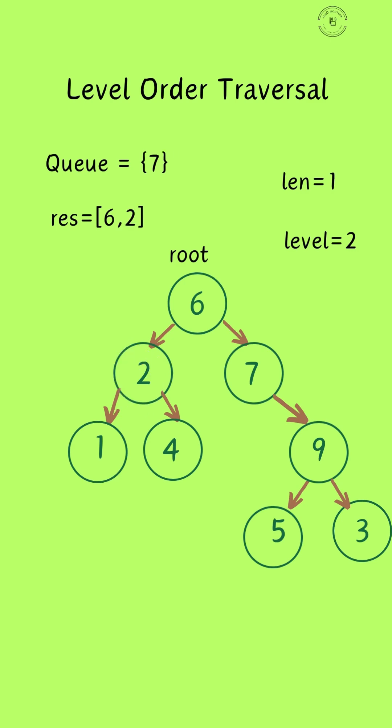Then we pop element 2 and place it on the result array. Then we append child nodes of 2 to the queue. Then we pop 7 from the queue and place it on the array. After that we append 9 to the queue, then we go to the next level.